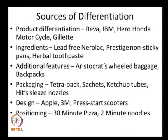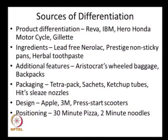Aristocrat's wheeled baggage pioneered the concept of having wheels as part of the baggage. Today you see backpacks with mobile phone holders and water bottle holders — additional features provided to the primary product as a source of differentiation. Differentiation can also come from packaging, as seen in tetrapacks, sachets, or ketchup tubes as against conventional bottles, or the cockroach-killer Hit's nozzle that provides access to otherwise difficult-to-reach places.